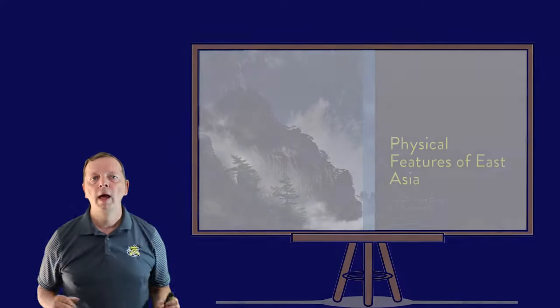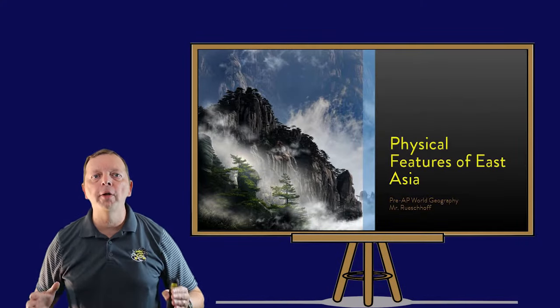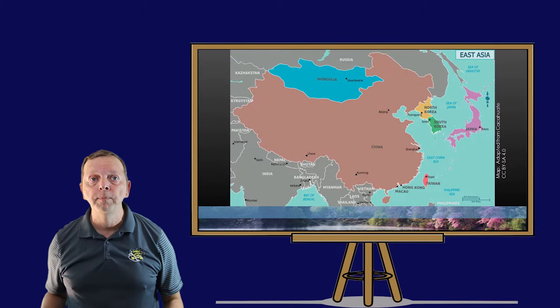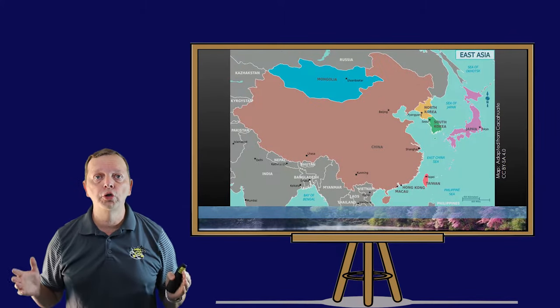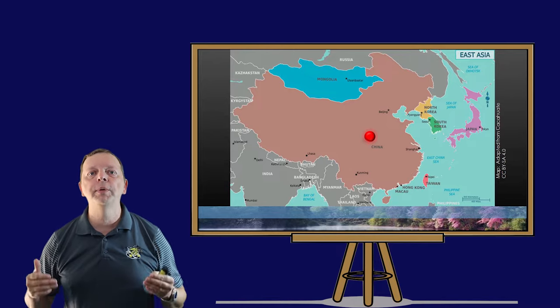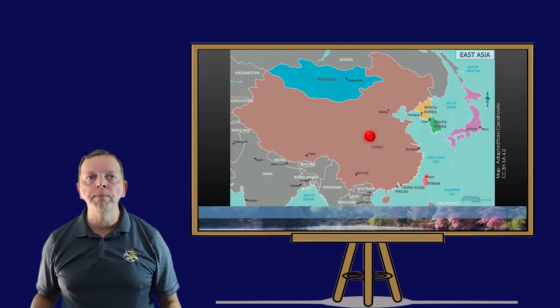In this lesson, we're going to look at the physical geography of East Asia and how that has impacted the people of the region. When we say East Asia, we're talking about the last six countries in Asia we're going to discuss. Those countries include China, which is not just the largest country in the region, but has also been the major force of culture in the region.